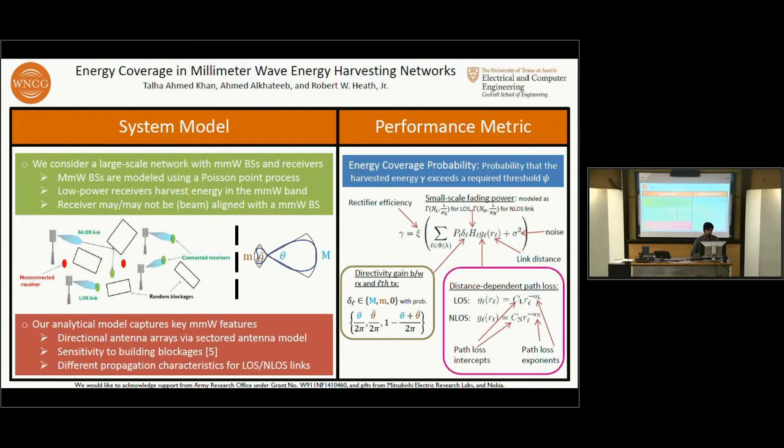In our system model, we consider a large-scale network with millimeter wave base stations and receivers. The millimeter wave base stations are modeled using a Poisson Point process. Also visible are the low-power sensors that harvest energy in the millimeter wave band. We also include blockages due to buildings in our model, which are also modeled using a Poisson Point process independent of the base station process.